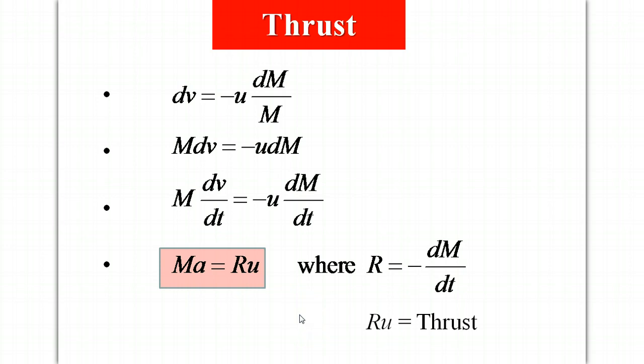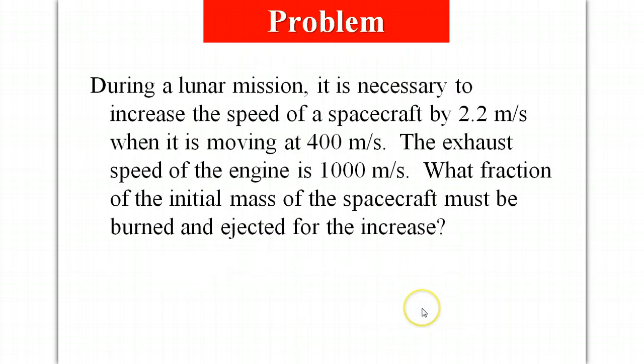So we end up with a couple fairly simple relationships by looking at this system where the mass changes. Here's a typical problem: during a lunar mission is necessary to increase the speed of the spacecraft by 2.2 meters per second when it's moving at 400 meters per second. The exhaust speed is a thousand meters per second. What fraction of the initial mass spacecraft must be burned and ejected?